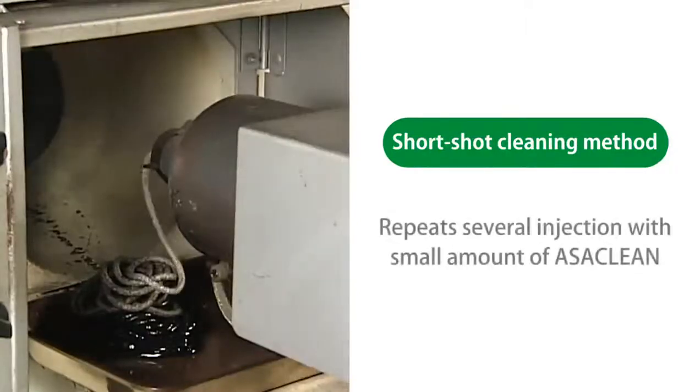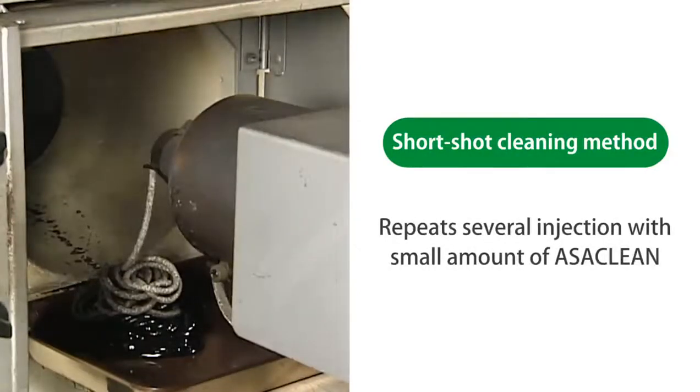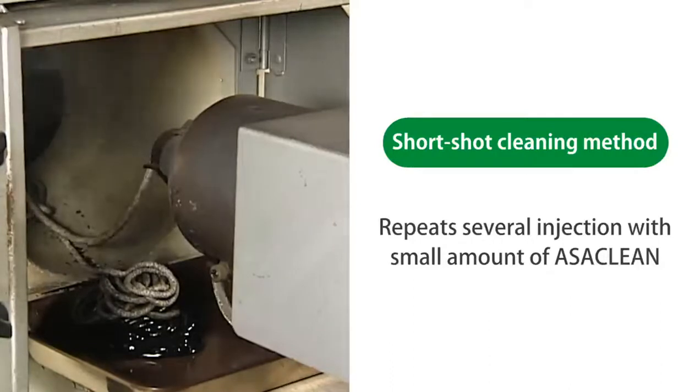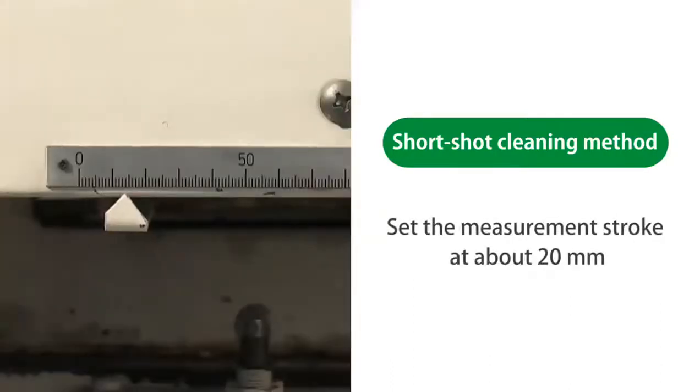The short shot cleaning method repeats several injections with small amounts of Asaclean. To begin, set the measurement stroke at about 20 millimeters.